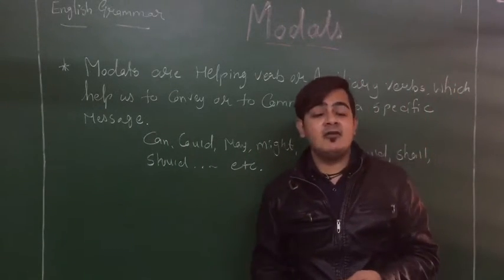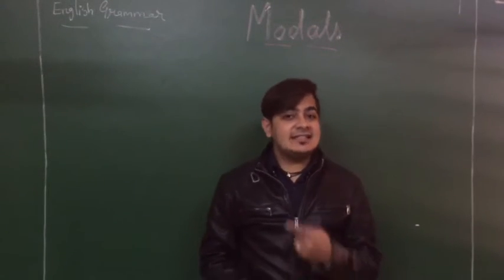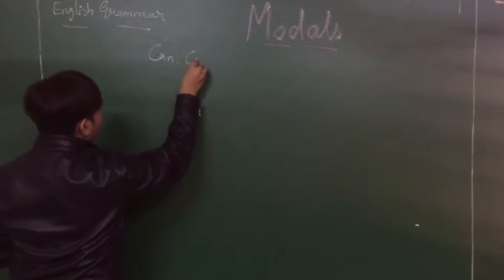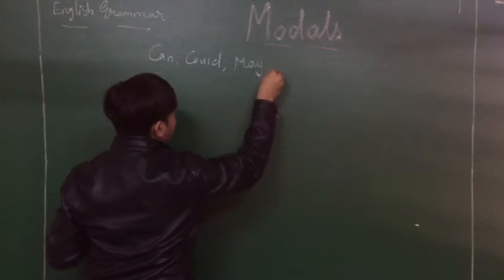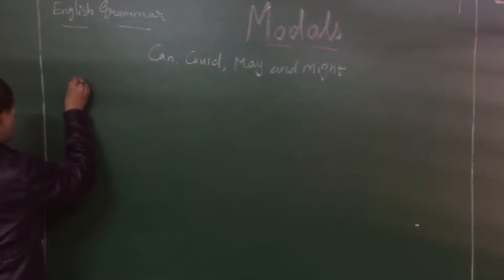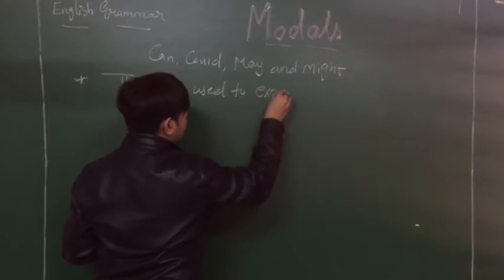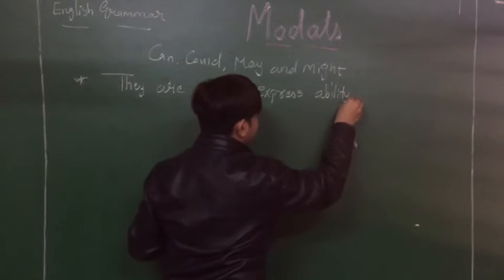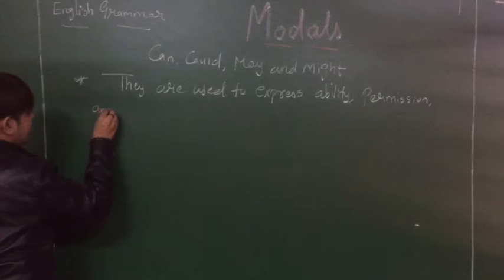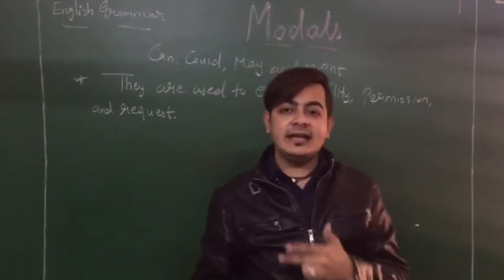These modals also have some specific importance of their own, so let's see what they express. Let's start with can, could, may, and might — what they express. They are used to express ability and request. Can, could, may, and might are used for ability, permission, possibility, and request.